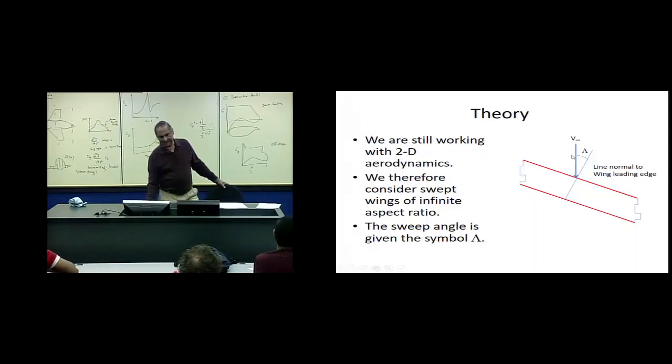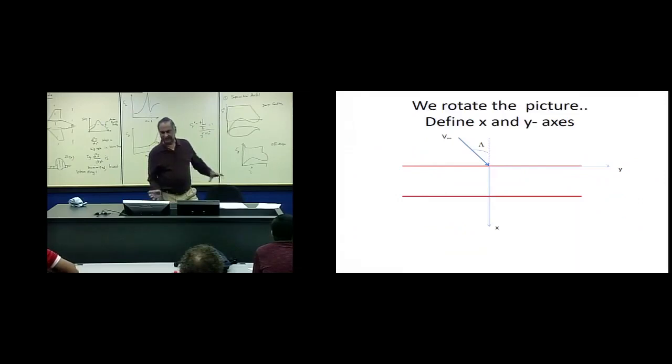Now, this sweep angle is called lambda, you know, it is the angle. Now, we can solve this by rotating it by lambda, so that the leading edge happens to be along the y axis, like we have always done it for unswept wings, except now the free stream is inclined at an angle, v infinity. That means, the free stream has got a normal component, v infinity times cosine lambda, normal to the leading edge. It has got a tangential component, v infinity times sine of lambda. So, these are the two components it has got.